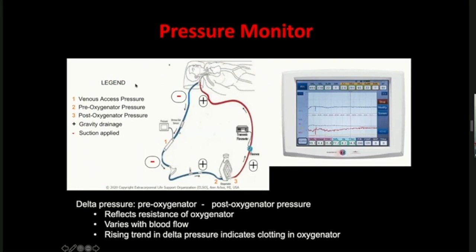The pressure monitor is a very important component for assessing and troubleshooting the ECMO circuit. In this schematic, the patient has a double lumen cannula. The red denotes the return cannula carrying oxygenated blood after passing through the membrane oxygenator, while blue refers to the drainage cannula draining deoxygenated blood. Everything before the pump is negative pressure — the only way blood can be drawn from the patient. Any disconnection in this area will result in atmospheric air being sucked into the system, introducing air within the ECMO circuit.